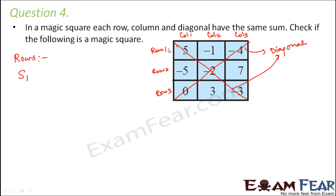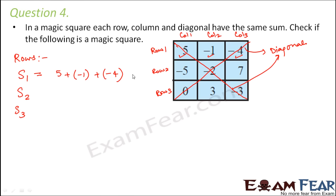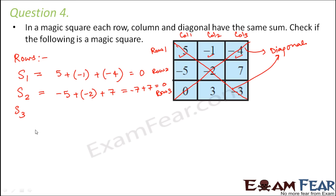Let us find the sum of all rows. Row one: 5 + (−1) + (−4) = 0. Row two: (−5) + (−2) + 7 = −7 + 7 = 0. Row three: 0 + 3 + (−3) = 0. The sum of all three rows is zero.